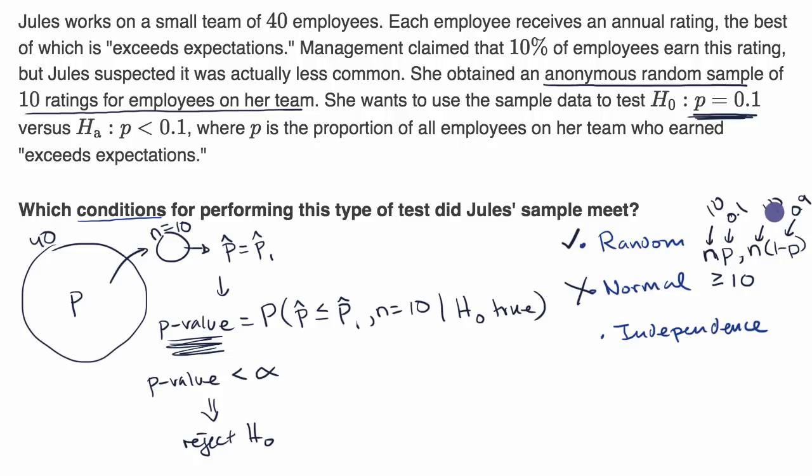But even the second one, 10 times 0.9 is nine. That's also not greater than or equal to 10, so we don't meet this normal condition. We can't feel good that the sampling distribution is roughly normal, which we normally assume when we're trying to make this type of calculation.